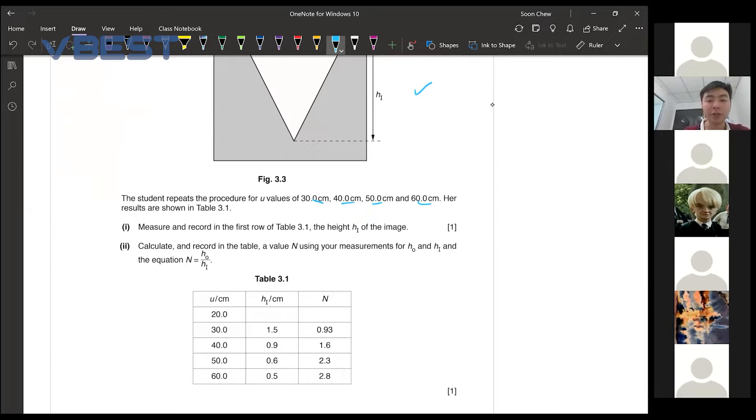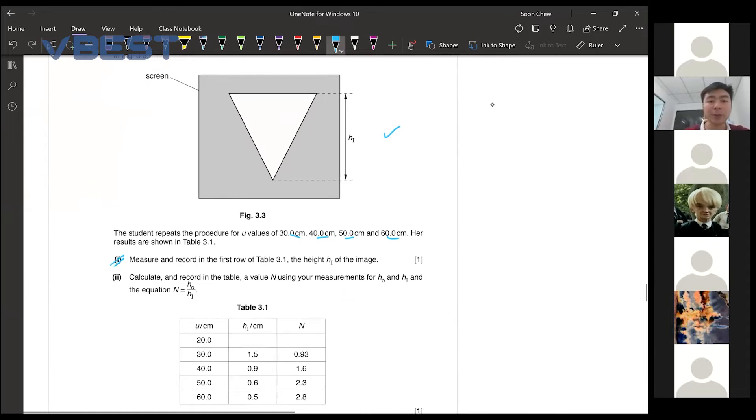They want you to measure and record the table. This image over here, if you use your ruler to measure, you get about 4.5cm.